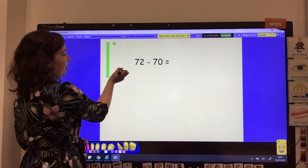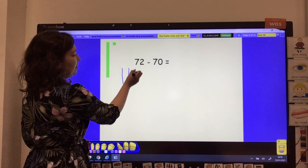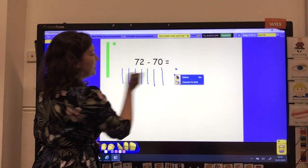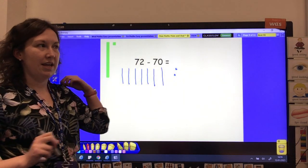Okay, let's have a go together. Are we ready? 10, 20, 30, 40, 50, 60, 70, 71, 72. So we're taking away 70.